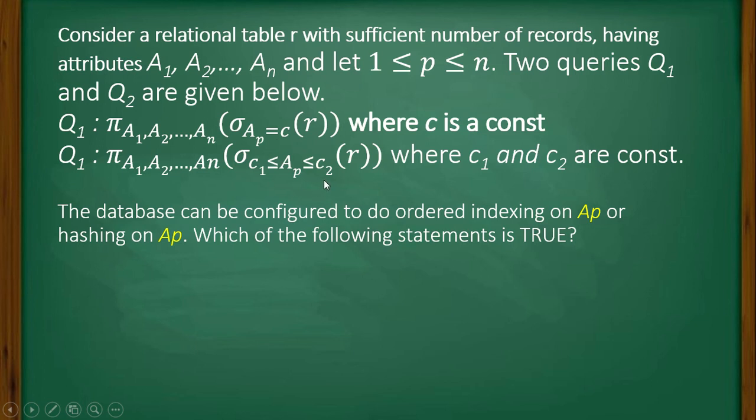The database can be configured to do ordered indexing on Ap or hashing on Ap. Which of the following statements is true? Option A: ordered indexing will always outperform hashing for both queries.